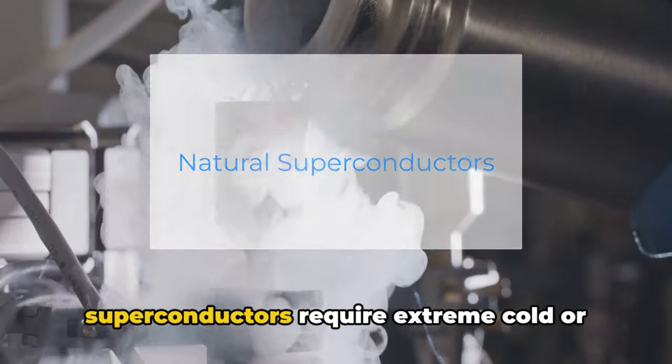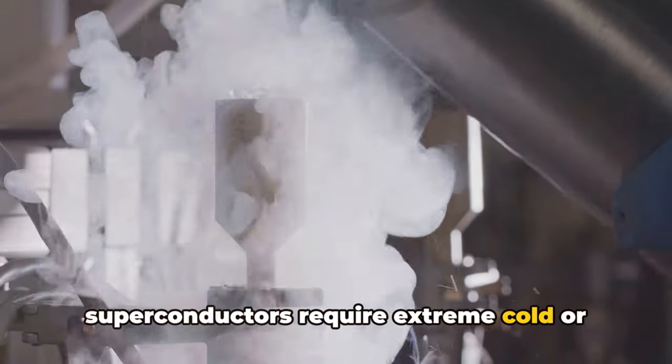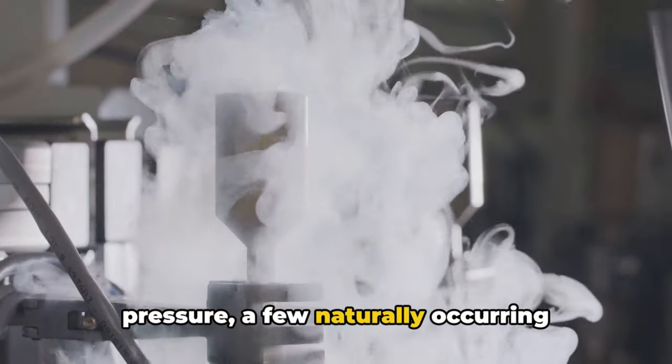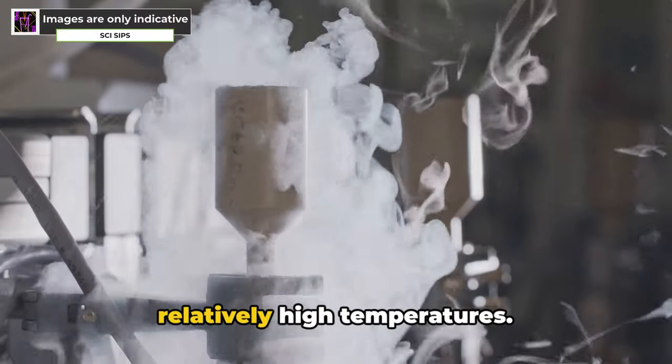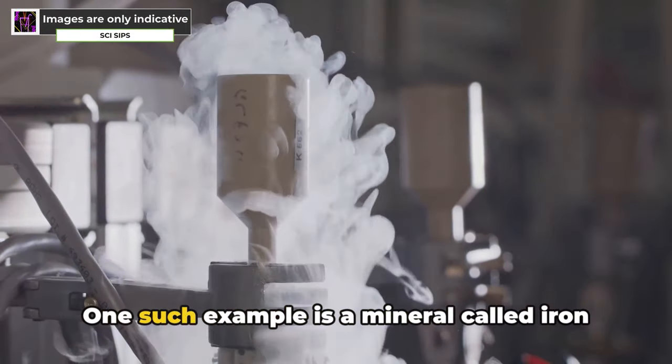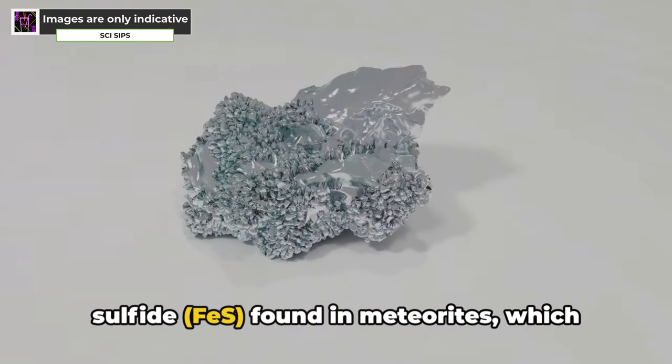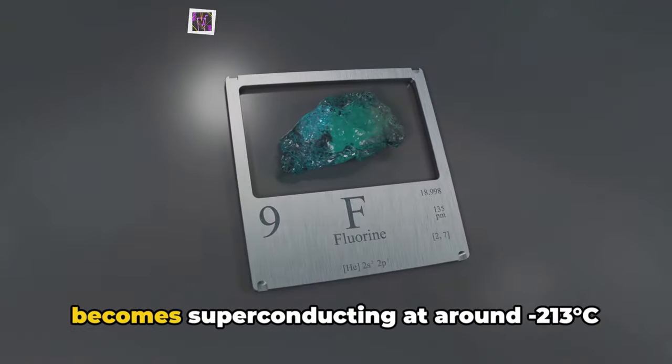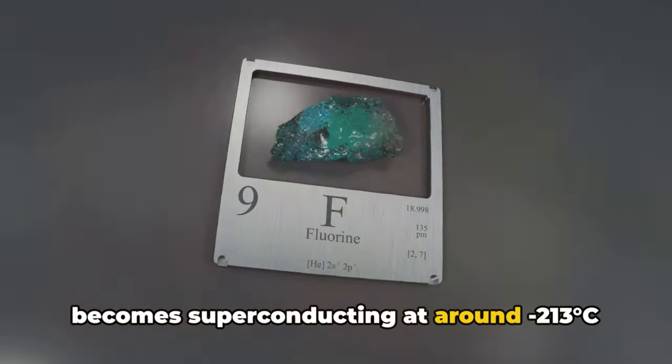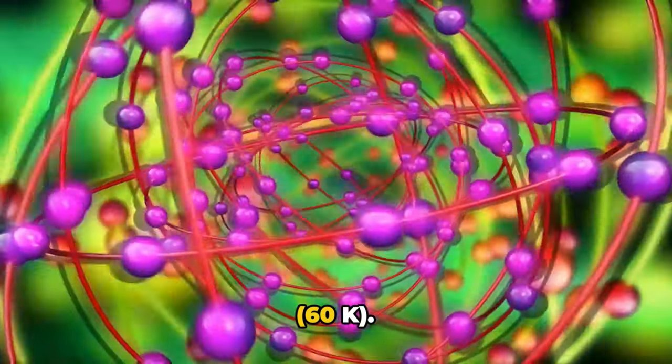Natural superconductors: While most superconductors require extreme cold or pressure, a few naturally occurring materials exhibit this property at relatively high temperatures. One such example is a mineral called iron sulfide, FeS, found in meteorites, which becomes superconducting at around minus 213 degrees Celsius.